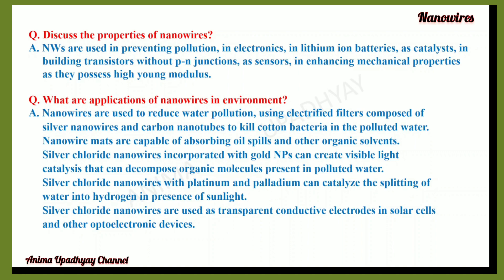What are the applications of nanowires in the environment? Nanowires are used to reduce water pollution using electrified filters composed of silver nanowires and carbon nanotubes to kill bacteria in polluted water. Nanowire mats are capable of absorbing oil spills and other organic solvents. Silver chloride nanowires incorporated with gold nanoparticles can create visible light catalysis that decomposes organic molecules present in polluted water.